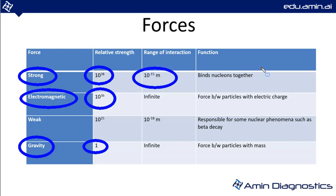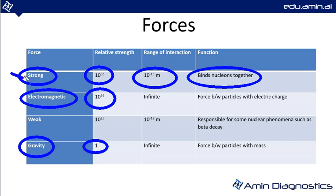The strong force has an even greater strength than the electromagnetic force and acts over a short range. Its main purpose is to bind nucleons together. Nucleons are specifically protons and neutrons. We will use these two forces — the strong force and the electromagnetic force — to discuss the stability of the nucleus in future slides.